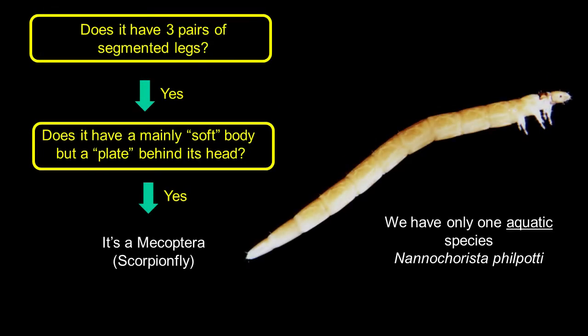One of the other orders that's a little less common, found more frequently in the South Island, particularly the high country, is again an animal that's got three pairs of legs, but it doesn't have a hard body — it's got a very soft body — but it has a plate directly behind its head in the thorax region. This animal is a Mecoptera, a scorpion fly. We only have one species here in New Zealand, and that's Nanocorista philpotii. So you might come across a Mecoptera — three pairs of legs, but with this plate on its thorax directly behind its head.